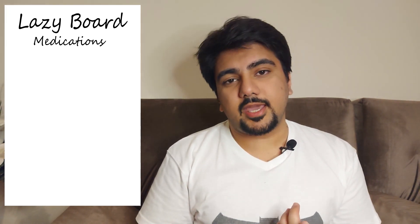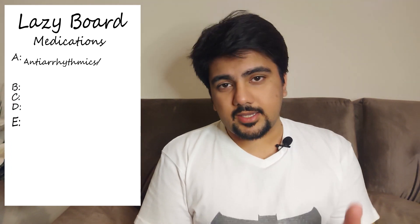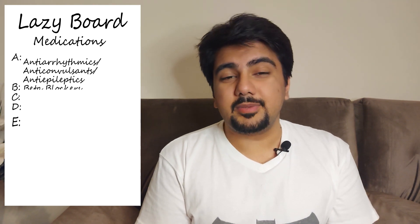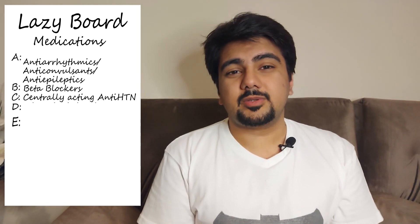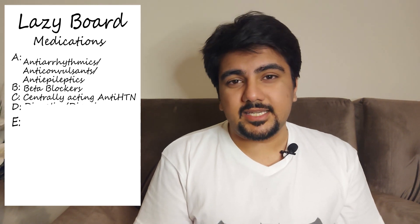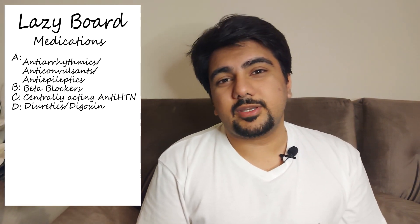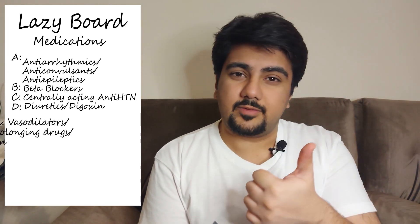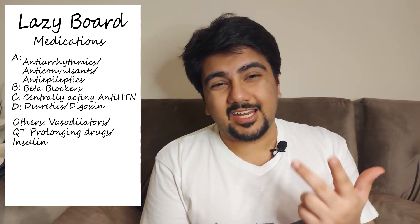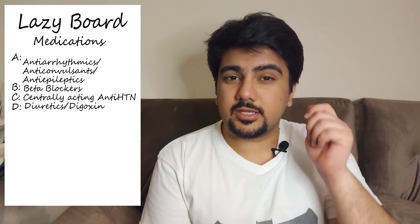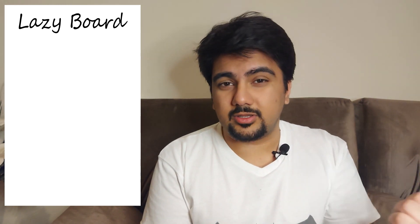For medications, use the mnemonic ABCDE: A — antiarrhythmics, anticonvulsants, antiepileptics; B — beta blockers; C — centrally acting antihypertensives; D — diuretics and digoxin. Beyond that, remember three additional important drugs: vasodilators, QT-prolonging drugs, and insulin — insulin is critical because we discussed hypoglycemia earlier.